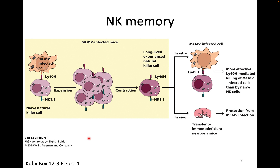Then another phenomenon was described — NK cell memory. When an NK cell is activated, those NK cells seemed to expand and then contract very much like we see in an adaptive immune response. Cells that had previously experienced this signal would then be more effective at killing than naive NK cells, as if they were more activated effector cells, just like we see with the T cell response.